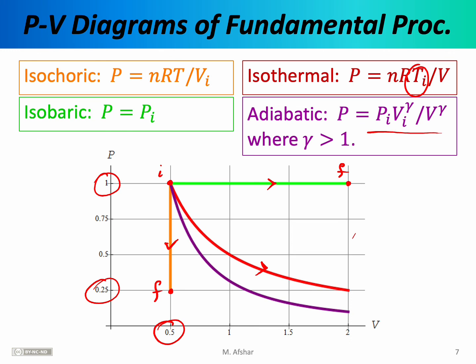In this equation, the constant gamma is known as the specific heat ratio. It's a number that's greater than 1, and understanding the specific heat ratio is going to require a few more lectures. So at this point, it is not at all obvious where this equation comes from or what exactly gamma means. For now, simply know the equation, and we'll eventually derive it after we've laid down some foundation for it.